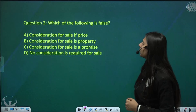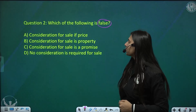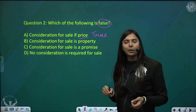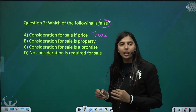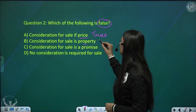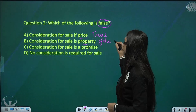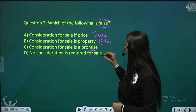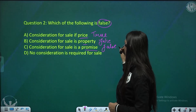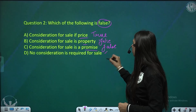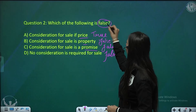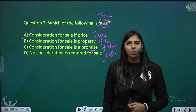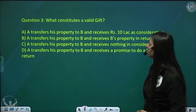The second question: which of the following is false? Option A — consideration for sale is price — is true. Option B — consideration for sale is property — this is false, because in sale the consideration is always price. Options C and D are also false. So the question should ask which is true, and the correct answer is option A.